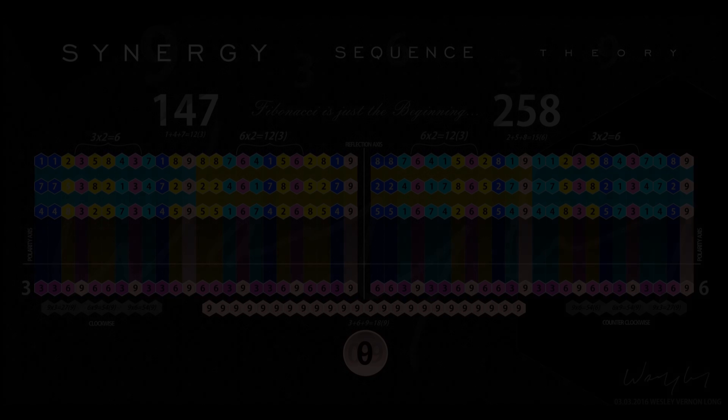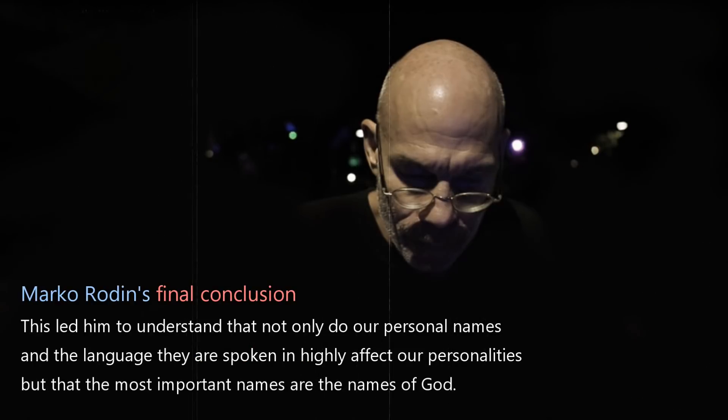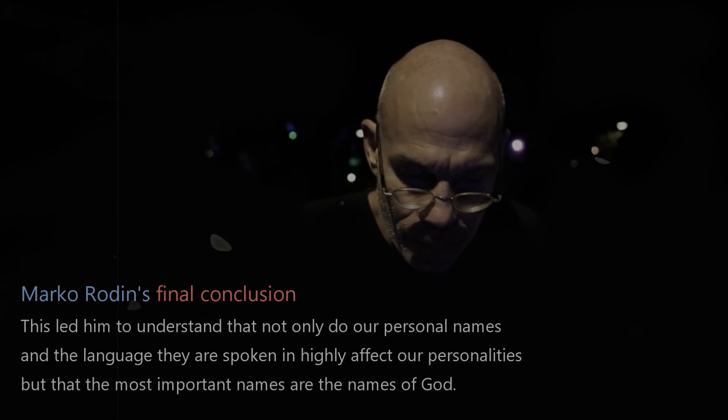Well, Marco Rodin's final conclusion was that all intelligence comes from a person's name. This led him to understand that not only our personal names and the language they are spoken in highly affect our personalities, but that the most important names are the names of God.